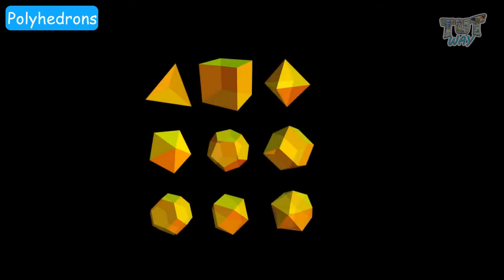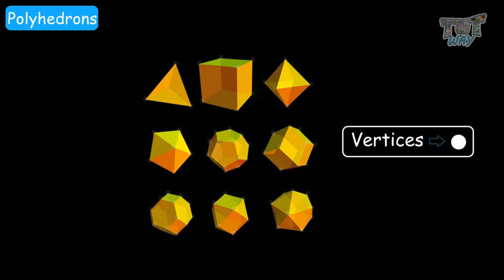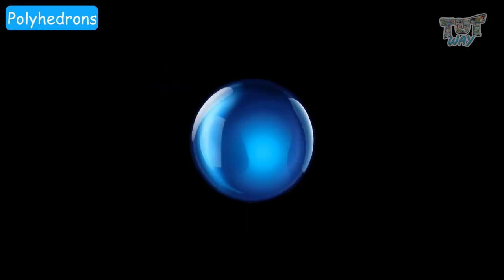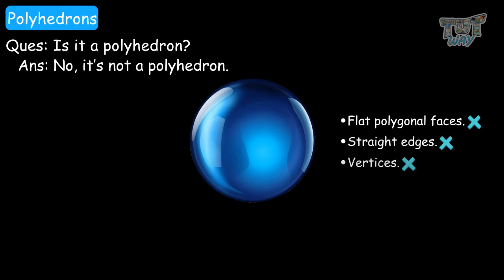Polyhedrons are 3D shapes which have flat polygonal faces. A polygon is a 2D figure which has three or more straight sides — so a polygon cannot have a curved edge. Those are the characteristics of a polygon. And polyhedrons only have polygonal faces, straight edges, and pointed corners or vertices. Let's look at some polyhedrons. You can see that they have flat polygonal faces and pointed edges and vertices. Now, this is a sphere — is it a polyhedron? No, it is not, because it does not have flat polygonal faces, nor does it have a straight edge or vertices. So a sphere is not a polyhedron.